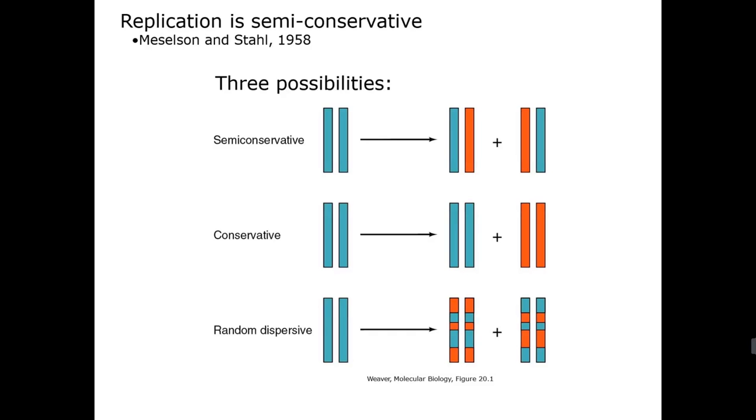As I mentioned, the thing that was nice about this experiment to me is that they had several different kinds of models that had been proposed at the time for how DNA replication might be occurring within cells, and they devised a very simple straightforward experiment to distinguish between these three possibilities.